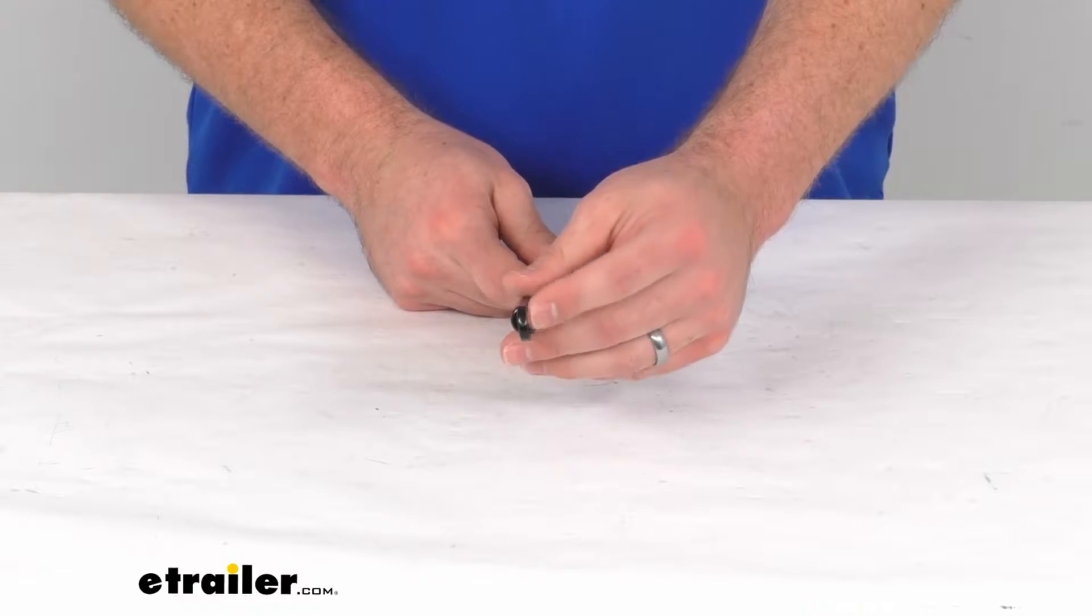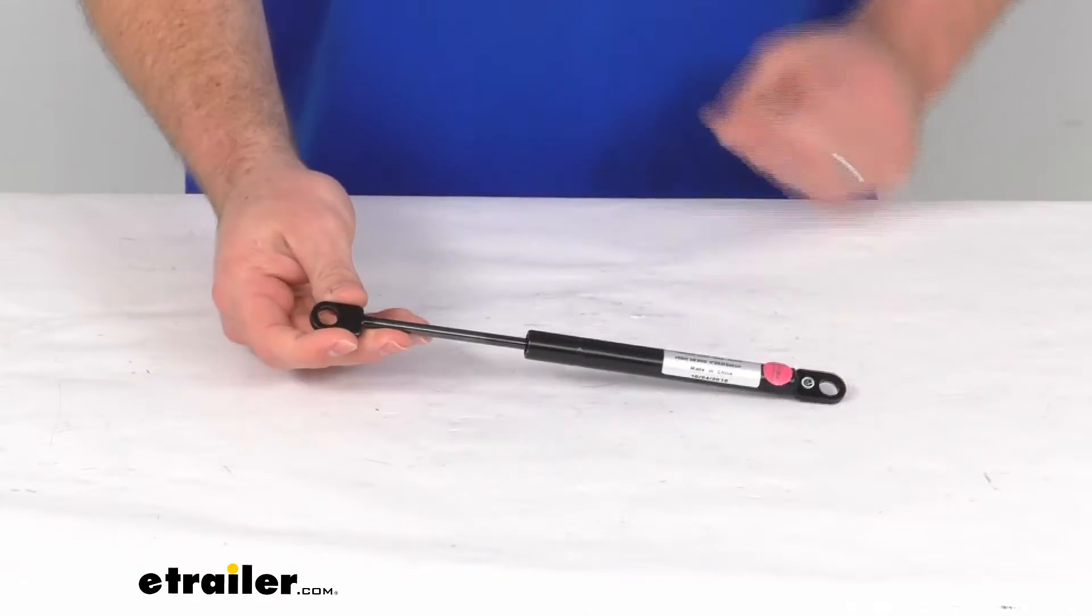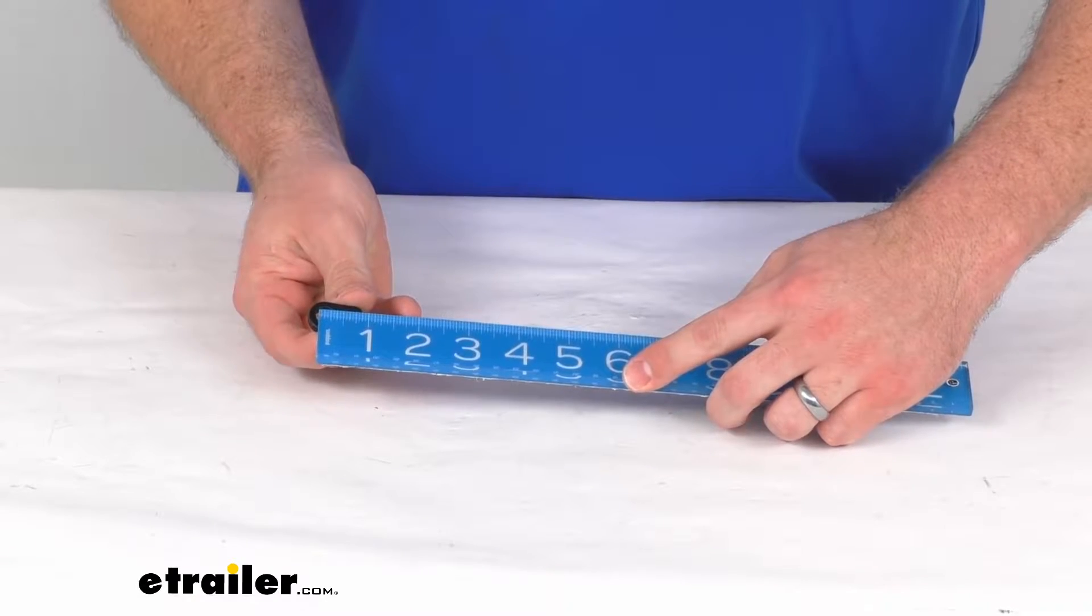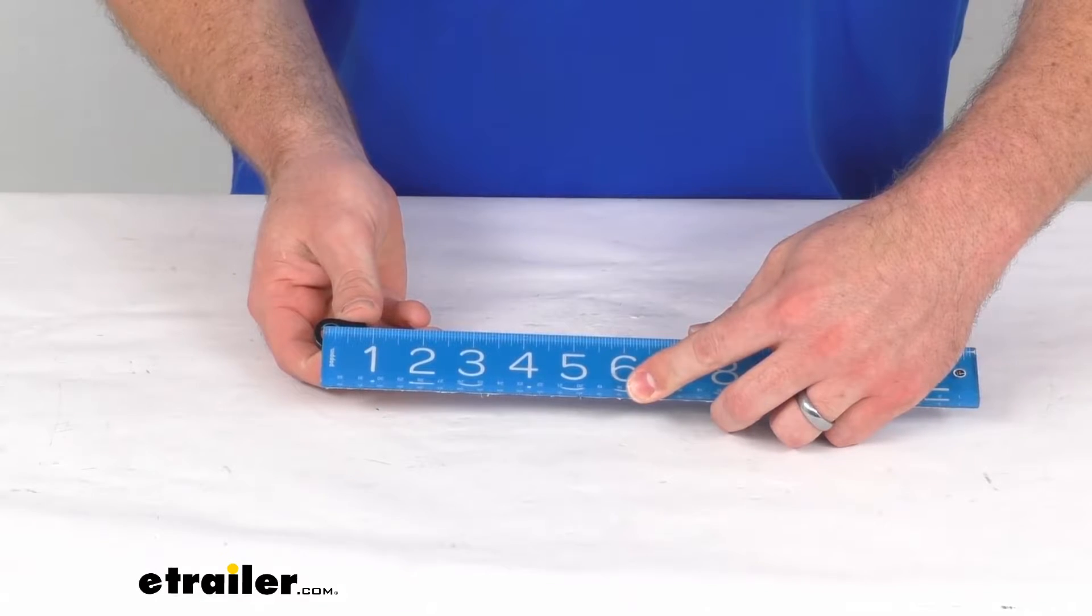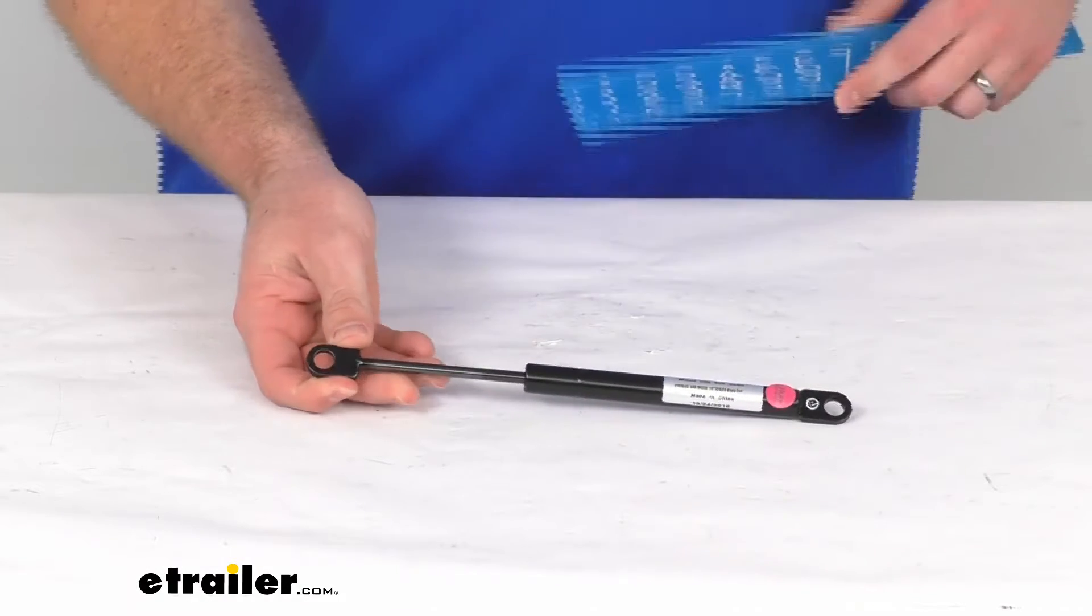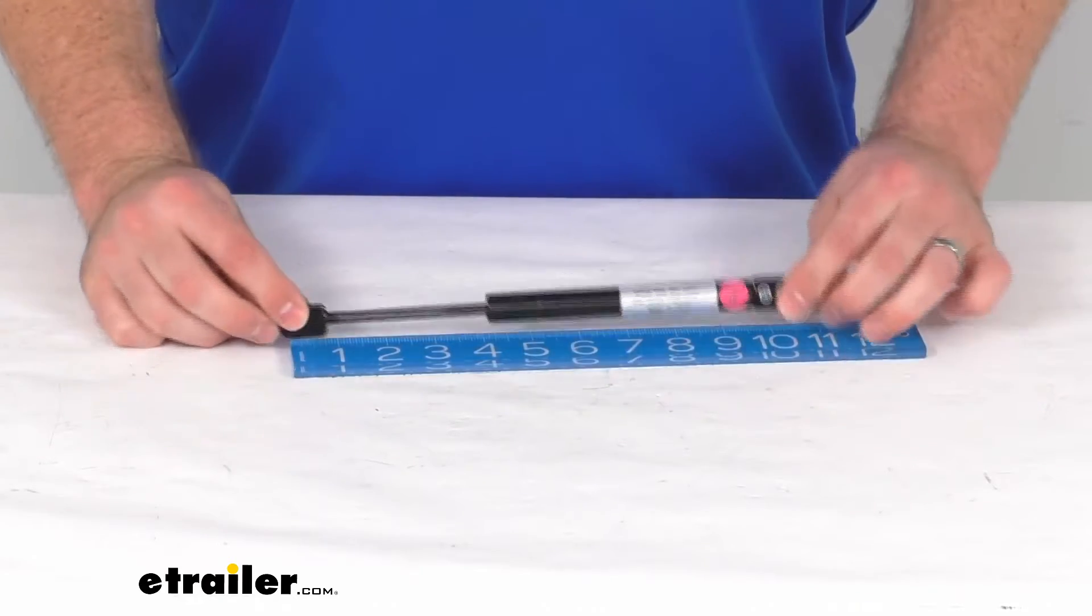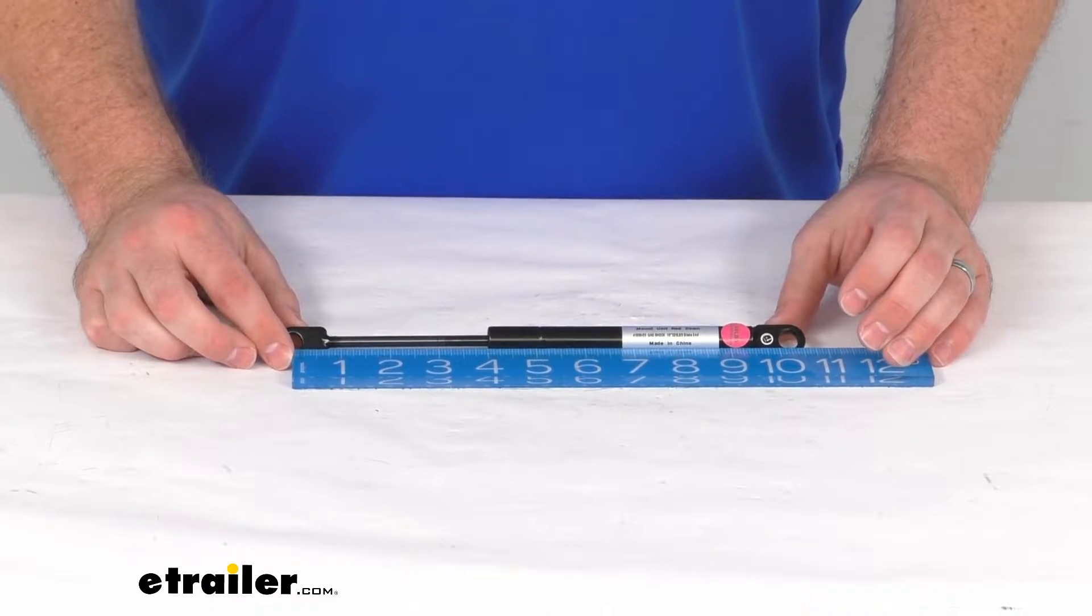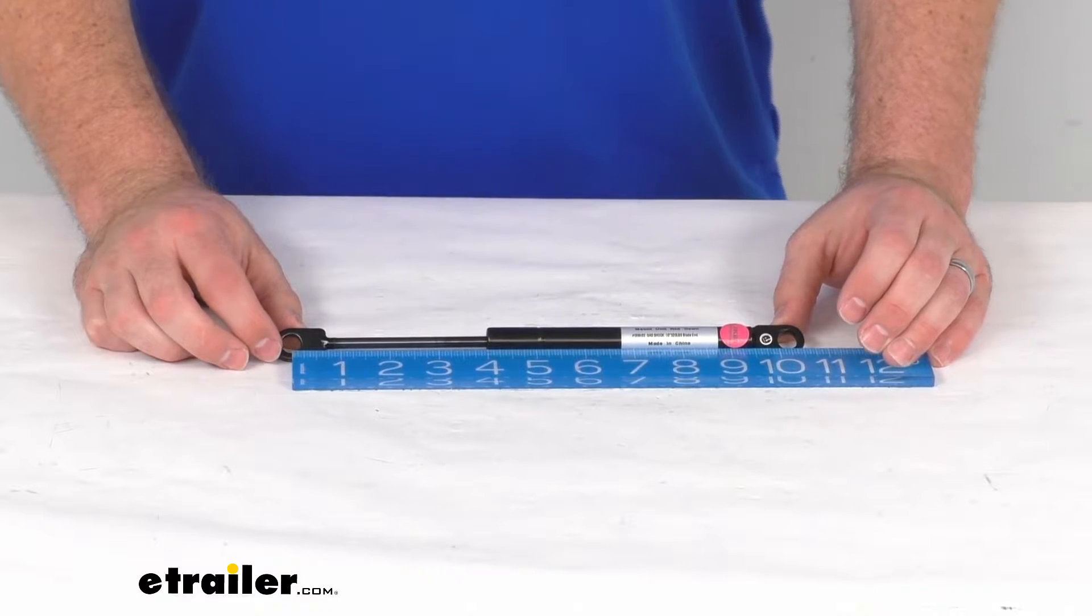It does have the blade style connectors, so you can see there those holes are right about three-eighths of an inch in diameter. And overall width from the center of one eye to the center of the other, we're at just over 10 inches—I'm going to call it 10 and one-eighth of an inch.